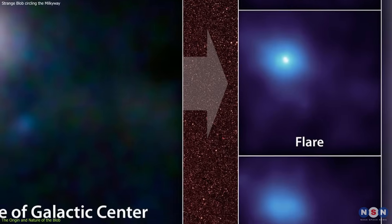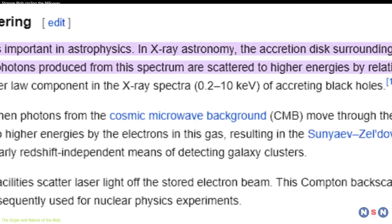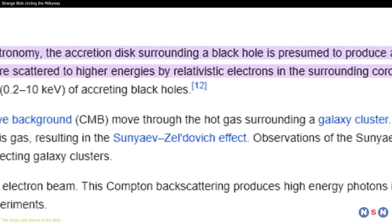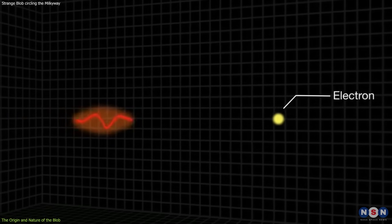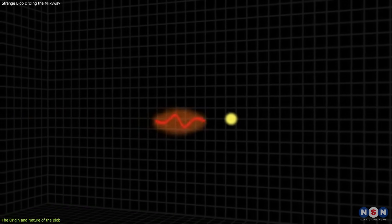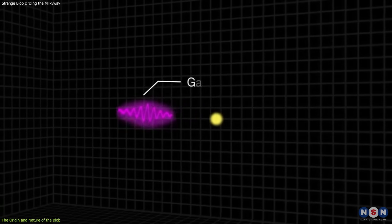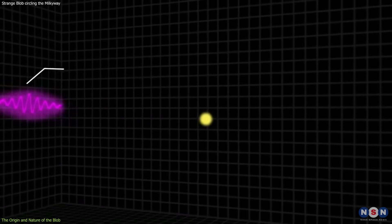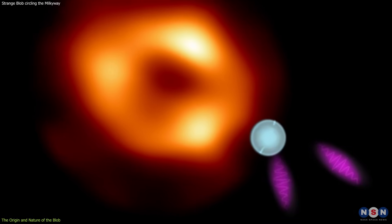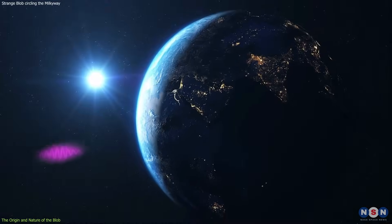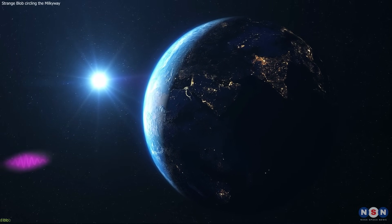However, the gamma rays are the most energetic and the most mysterious part of the blob's radiation. They are thought to be produced by a process called inverse Compton scattering, which is when low-energy photons, such as radio or infrared, are boosted to high-energy photons, such as gamma rays, by colliding with high-energy electrons in the blob. The gamma rays are then beamed in a narrow cone along the direction of the blob's motion, and they reach Earth every 76 minutes, when the blob is facing us.